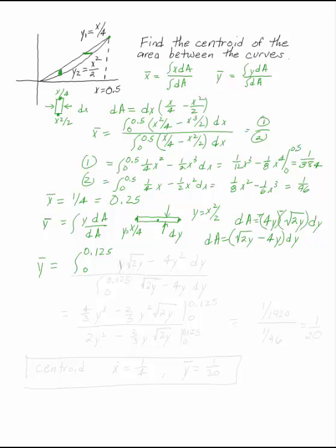I want to integrate y times (√(2y) minus 4y) dy and divide by the integral from 0 to 1/8 of (√(2y) minus 4y) dy.